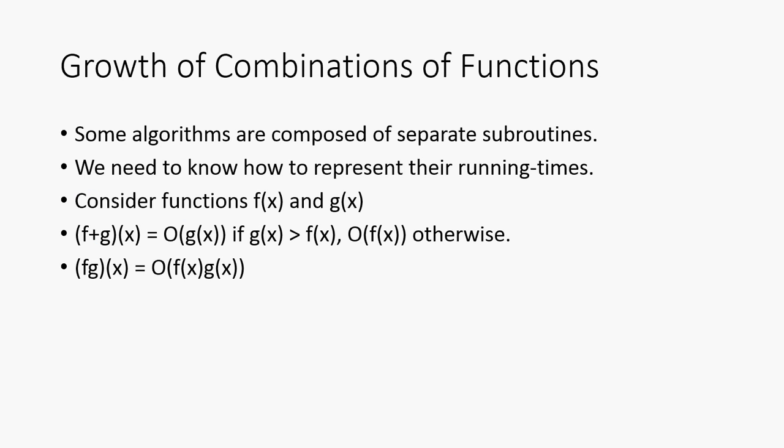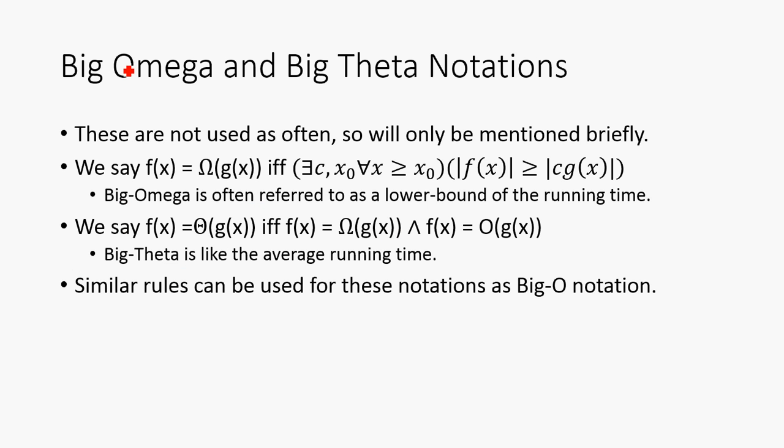So, sometimes algorithms are composed of separate subroutines or functions within functions. We need to consider how to represent these running times. So, consider functions f(x) and g(x), they're just arbitrary functions. We say that the sum of these two functions is going to be Big-O of g(x) if g(x) is the bigger one. Otherwise, it'd be f(x), which means that that's the bigger one. So, it's just Big-O of the bigger one, essentially. Because it's upper bound. So, then, we also have to consider the product. So, the product of f and g of x is going to be simply the product, Big-O, the product of their running times.